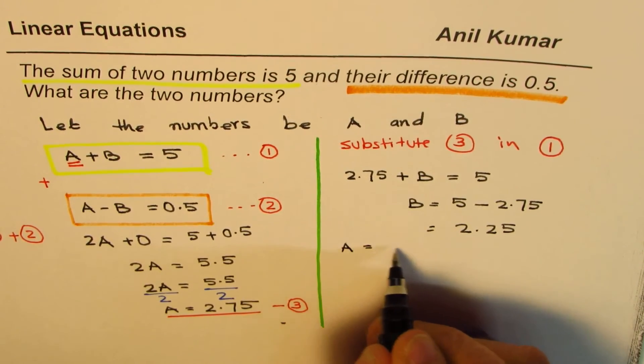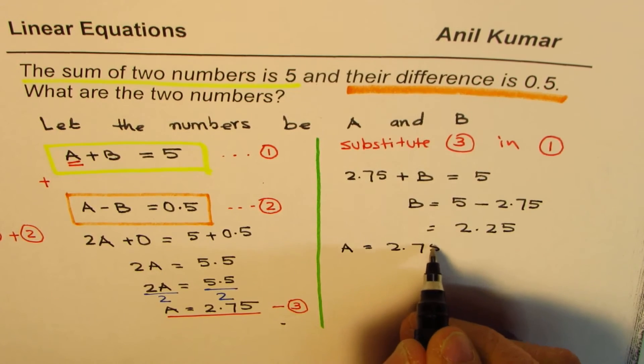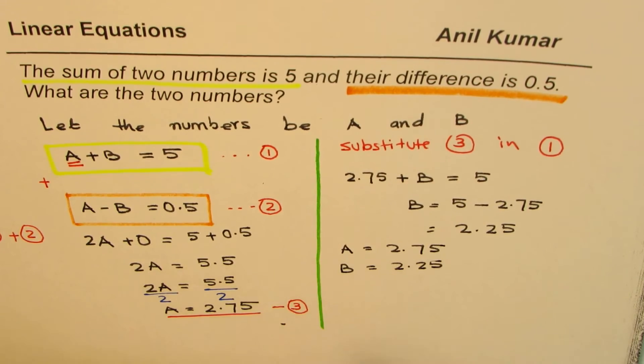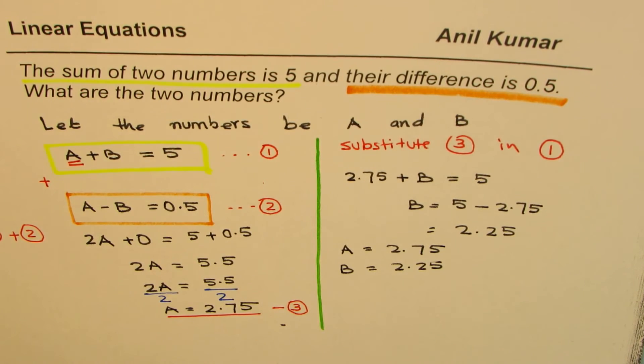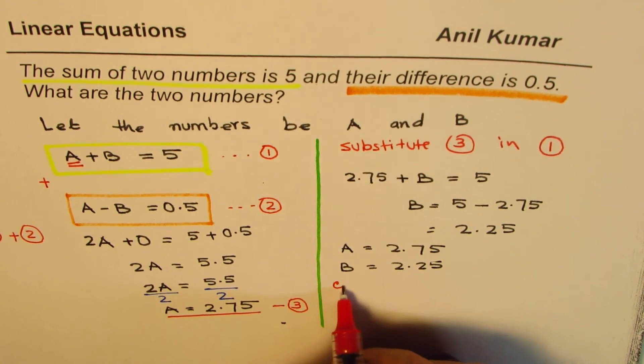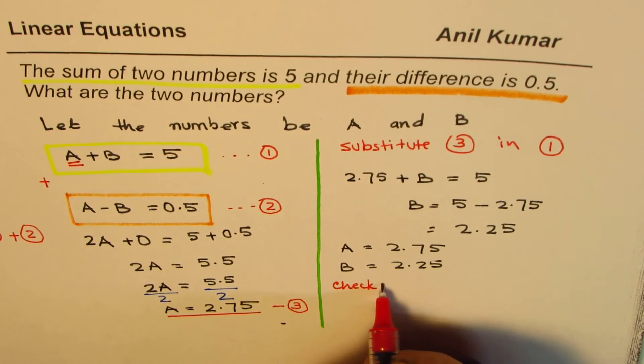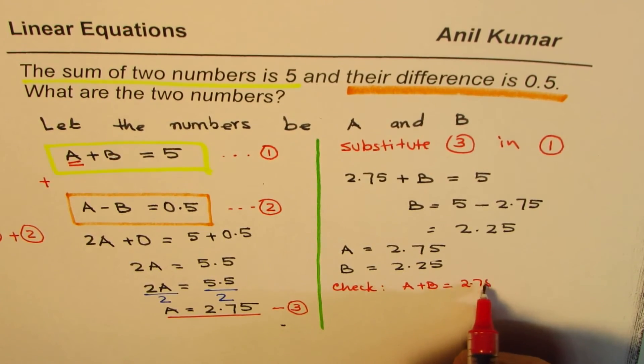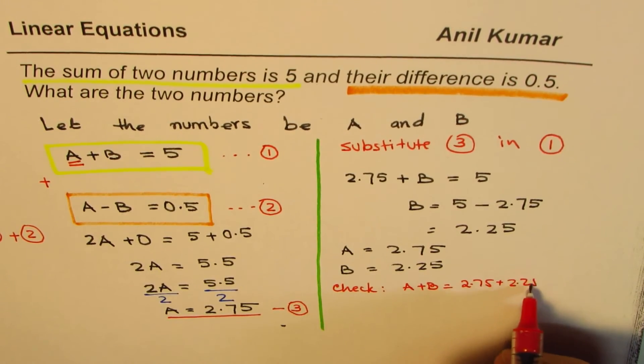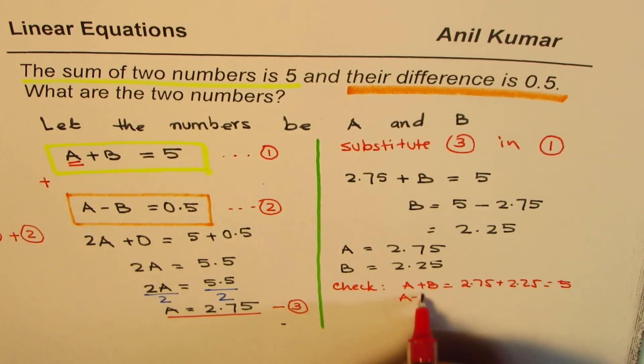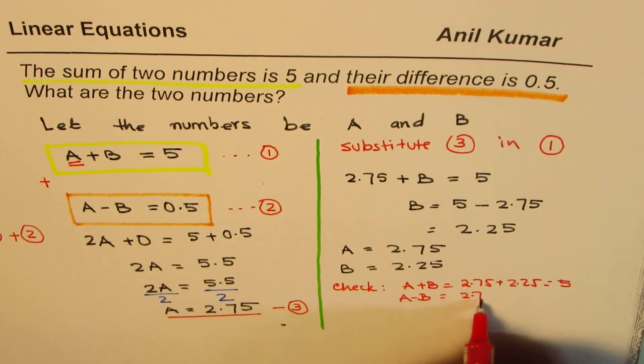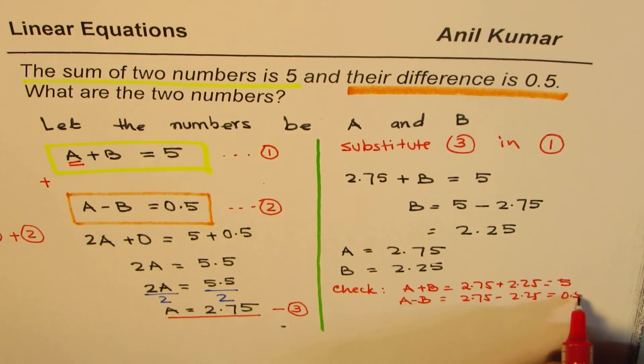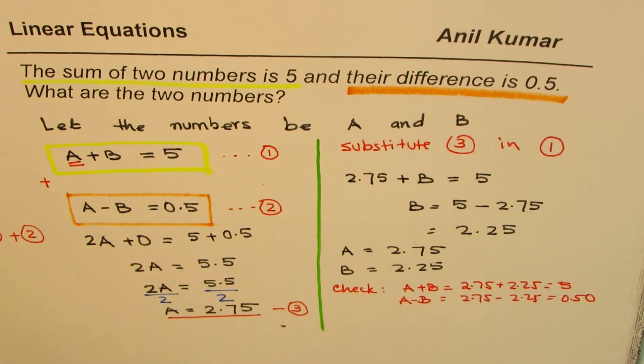And so we get A equals 2.75 and B equals 2.25. So these are our two numbers. It's a good idea to check your result. Let us check our result. If you do A plus B, you get 2.75 plus 2.25, which is indeed 5. And if you do A minus B, you get 2.75 minus 2.25, which is 0.50, which is same as 0.5.